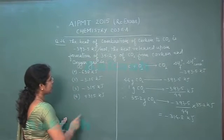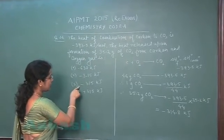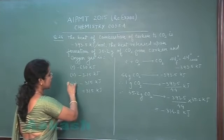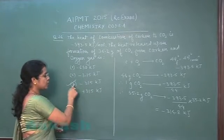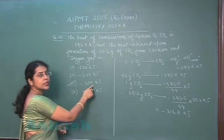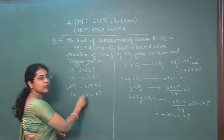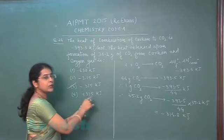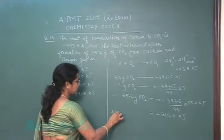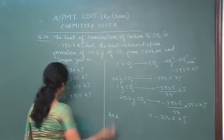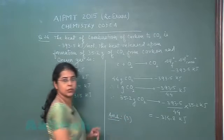First option is not correct. Second option is not correct. Third option is approximately equal to the exact value, so the third option is the correct one. In the fourth option the sign given is positive, so that is incorrect. The correct answer of this question is the third option.